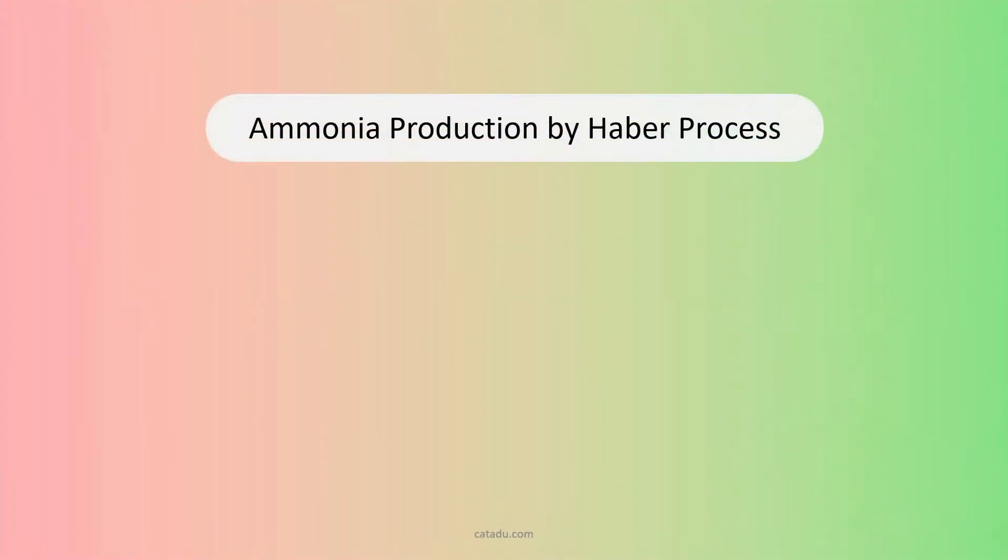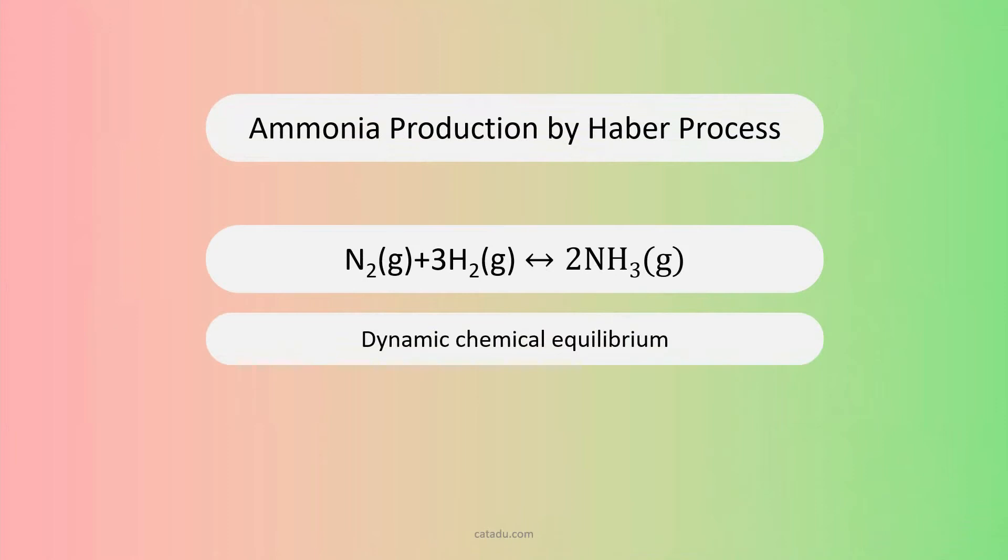Haber process is the manufacturing process of industry manufacturing process where we use nitrogen from the air and hydrogen from the petroleum. This is the reversible reaction. This is equilibrium, dynamic chemical equilibrium.